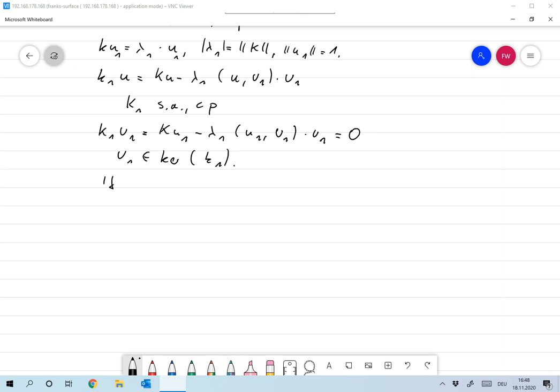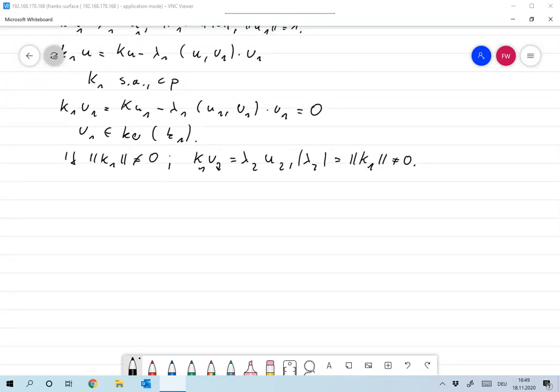Now since k₁ is self-adjoint and compact, if k₁ is not the zero operator, then we have a pair of eigenvector and eigenvalue with the property that k₁u₂ is λ₂ times u₂, and the absolute value of λ₂ is the norm of k₁, which is not equal to 0. And again, we choose the norm of u₂ to be 1.